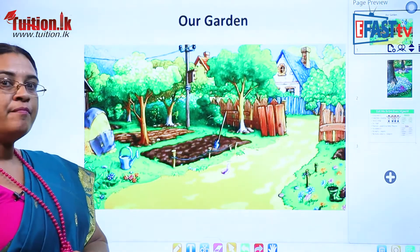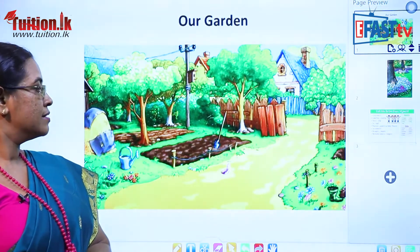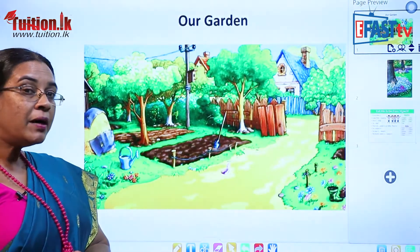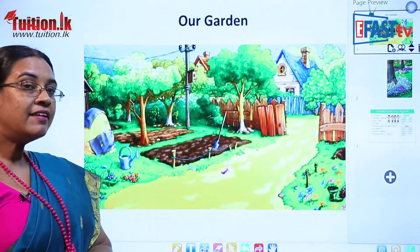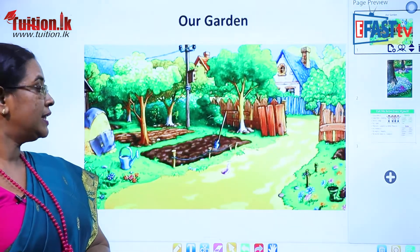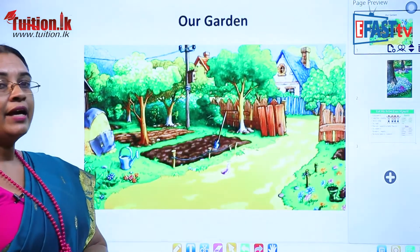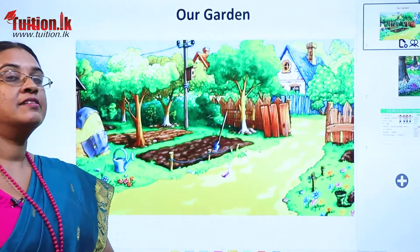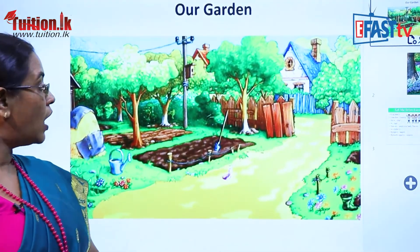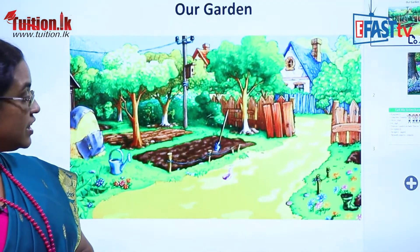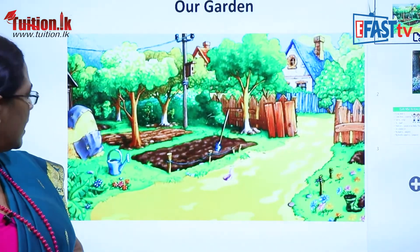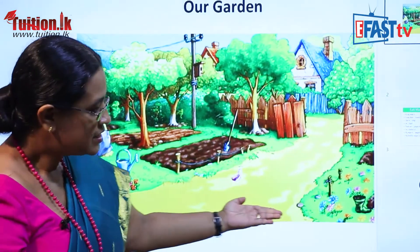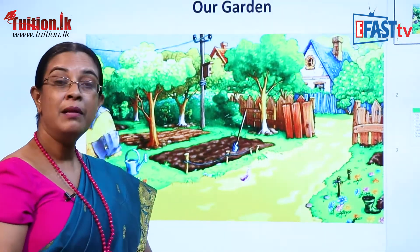You can see some vegetable beds. Some vegetable beds are there. There are trees. In your garden you have trees. At the same time you can see some flowers are there. There are birds.